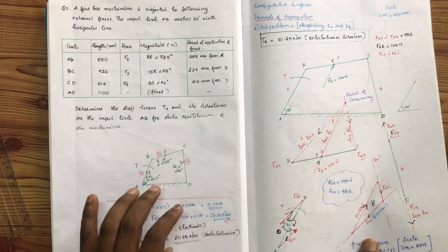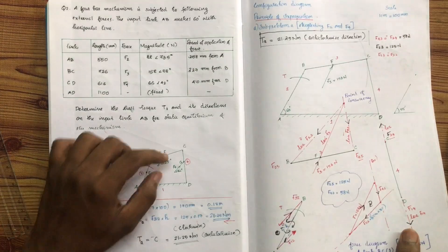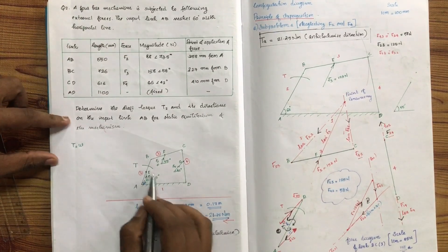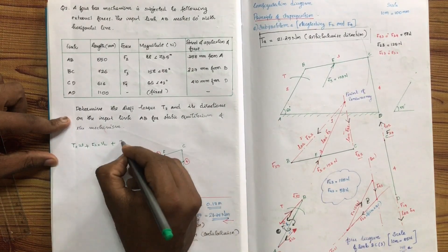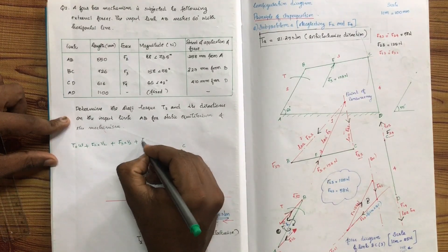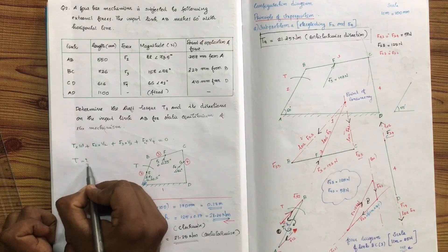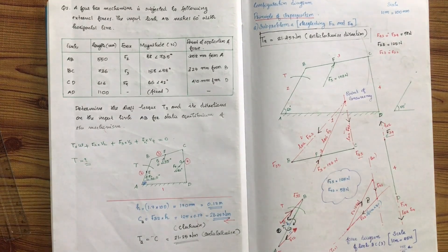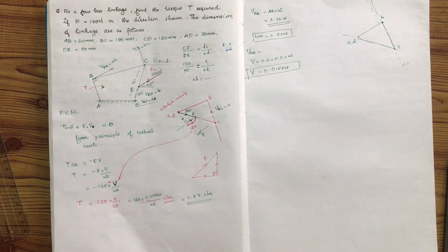Let's look at the parallel component of F. The principle of virtual work equation is: T times omega plus f₂ times v₂ plus f₃ times v₃ plus f₄ times v₄ equals zero. With the forces f₁, f₂, f₃, f₄ applied accordingly, we use the velocity diagram to complete the solution — that is the principle of virtual work.